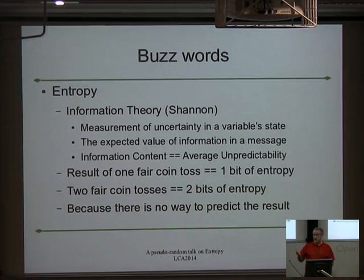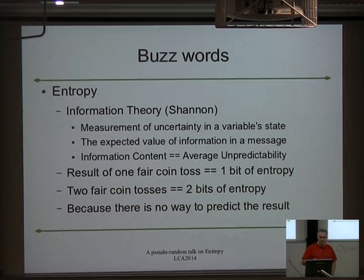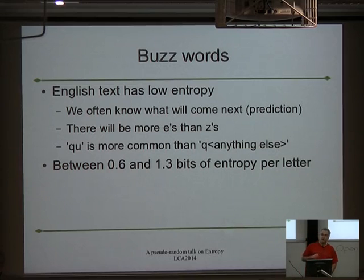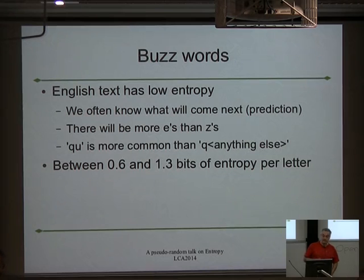We measure entropy in bits. The example is the fair coin toss — toss a coin, you've got one bit of entropy. You don't know what's going on because we don't know how the real world works. English text itself has a pretty variable level of entropy because we know an awful lot about the structure of the language and what is likely to happen next. For example, in Maori there are no Zs, so that's going to be a big surprise if one turns up.